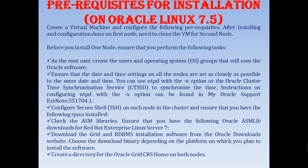Prerequisites for installation on Oracle Linux 7.5: first, create a couple of VMs and configure them. After installing and configuring the first node, clone the VM for the second node. Before installing One Node, perform the following tasks as a root user: create the users and OS groups that will own the Oracle software. Ensure date and time settings on all nodes are set as closely as possible to the same date and time — you can use NTPD with the slew option or Oracle Cluster Time Synchronization Service (CTSSD). Instructions for configuring NTPD can be found in My Oracle Support, note 551174.1.